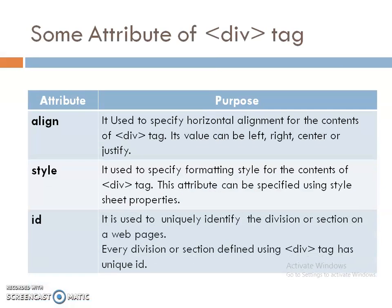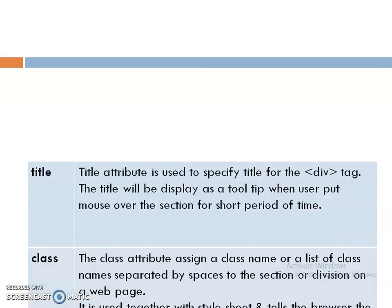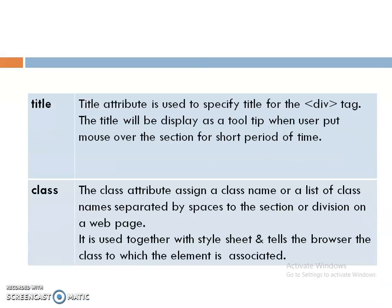Some attributes of the division tag. First is align, to specify the alignment, we use the align attribute. Style attribute is used to specify formatting for the stylesheet. The id attribute is used to uniquely identify a particular division or section in a web page. The class attribute is very similar to the id attribute — it specifies one or more class names for the element.